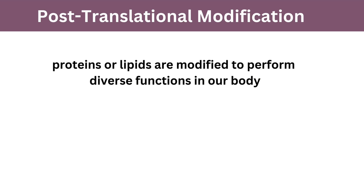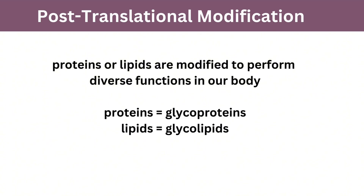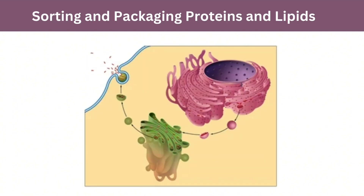Proteins or lipids are modified so that they can become diverse and perform various functions in our body. For example, the Golgi apparatus modifies proteins and lipids by adding carbohydrates and converting them to glycoproteins and glycolipids. In addition to modification, the Golgi apparatus is also involved in the sorting and packaging of proteins and lipids.